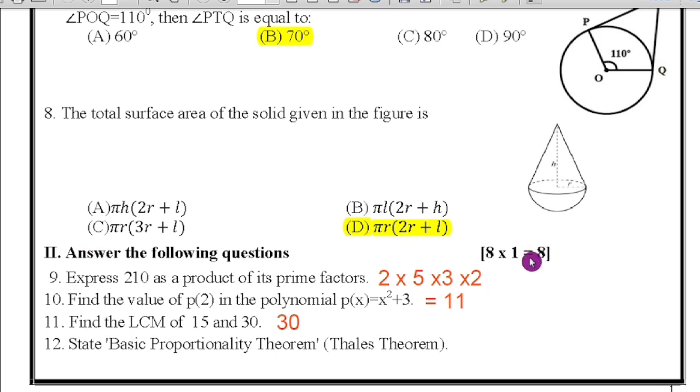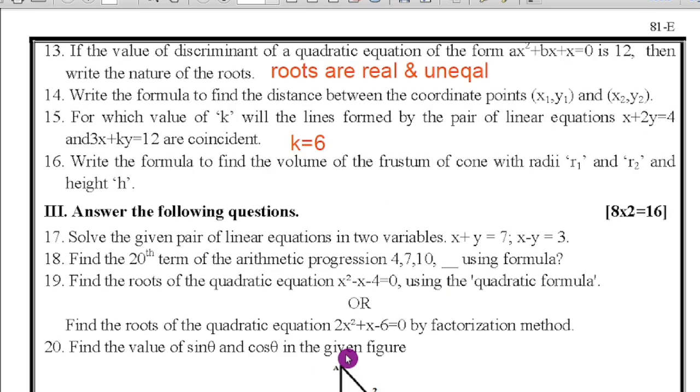Next, second main: answer the following questions, eight questions will be there. First ninth question: express 210 as the product of its prime factors. Therefore 2 × 5 × 3 × 7. This is the product of the prime factors of 210. Next tenth question: find the value of P(2) in the polynomial P(x) = x³ + 3. Therefore here you have to substitute 2 in x's place. Therefore 8 + 3 = 11. Find the LCM of 15 and 30, that is 30 only. Then state basic proportionality theorem, that is Thales theorem statement you should write, children.